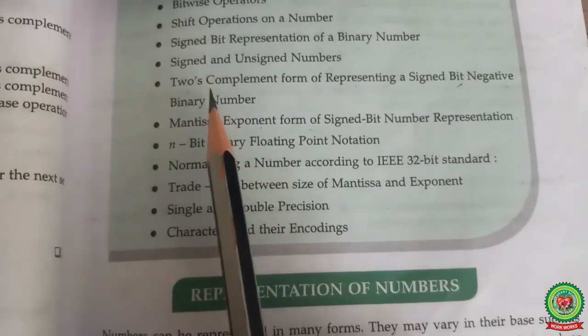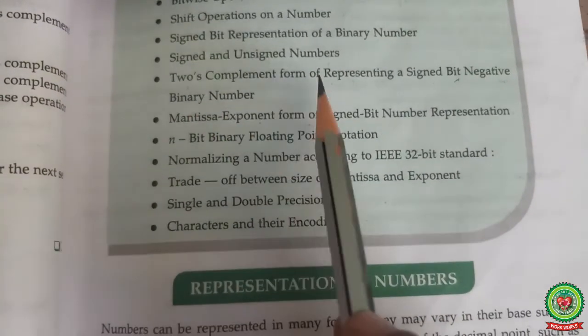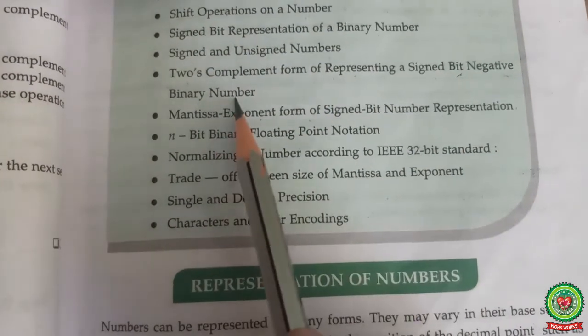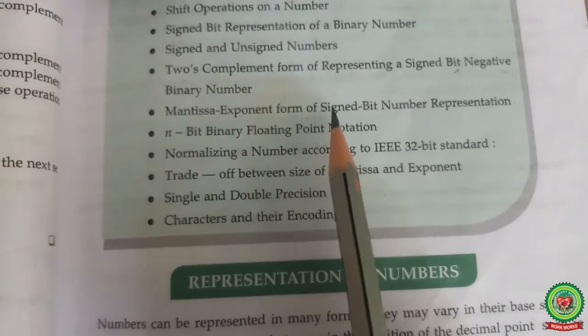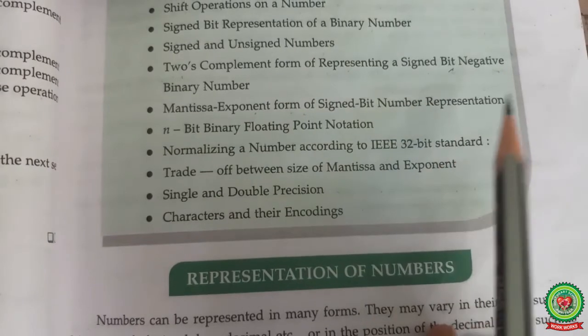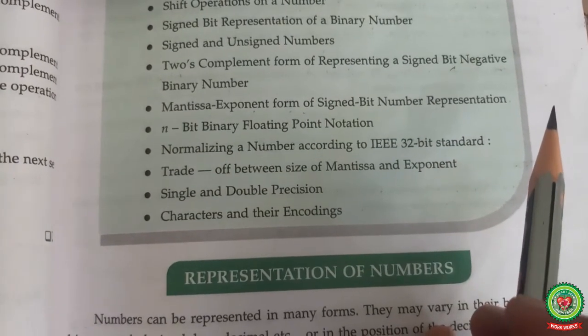Today we have discussed two's complement form of representing a signed bit negative binary number and mantissa exponent form of signed bit number representation. Do practice examples. Thank you.